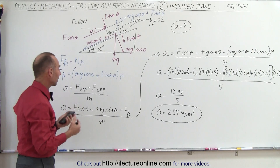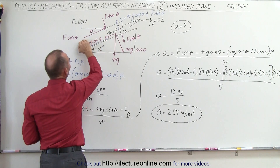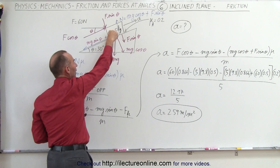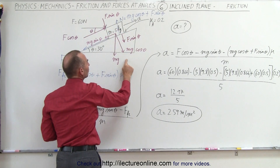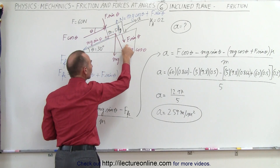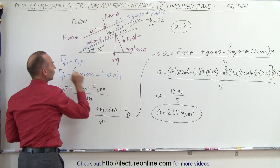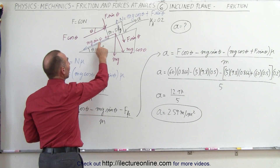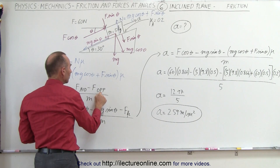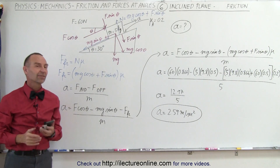So again, the way we do that is to recognize that the applied force has two components: one parallel to the incline, which pushes the block up the incline, and one perpendicular to the incline, which pushes the block against the surface. This means both mg cosine theta — the perpendicular weight component — plus the perpendicular component from the applied force must be added to calculate the normal force, which then allows you to calculate the friction force. Notice that both mg sine theta and the friction force oppose the acceleration, and they are subtracted from the parallel force component. And that's how it's done.